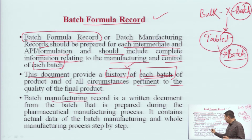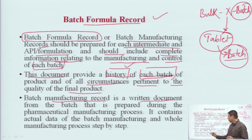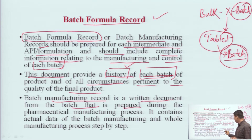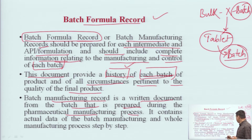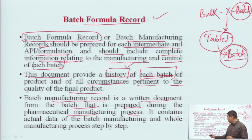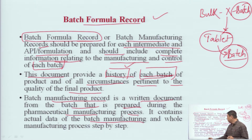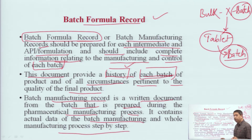The Batch Manufacturing Record is a written document prepared during the pharmaceutical manufacturing process, and it contains actual data of the batch manufacturing and the whole manufacturing process, step by step.